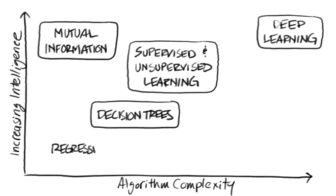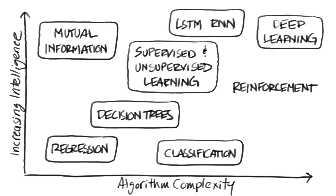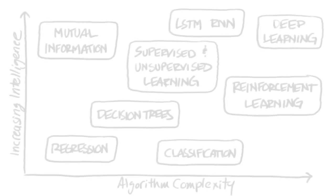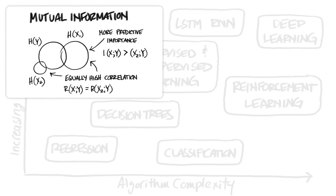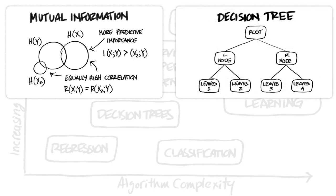The data science tools vary in algorithm complexity and increasing intelligence from regression to deep learning. Mutual information is used to understand the scope of impact of an issue. Decision trees are supervised learning used to determine network health by analyzing data, extracting feature information, and building models to predict failure or success of common networking problems.